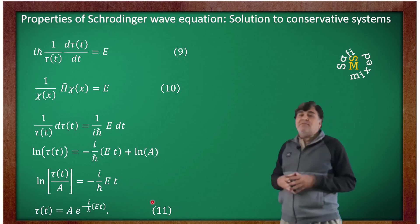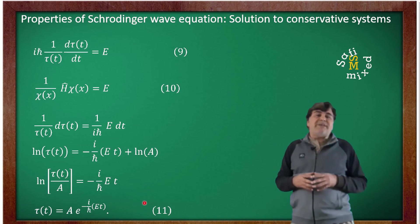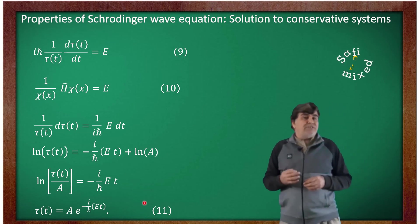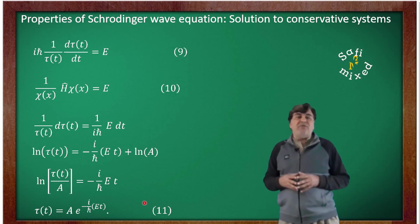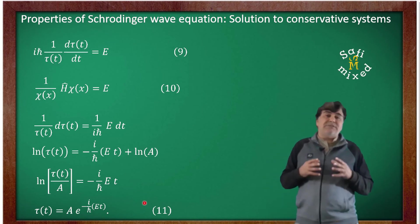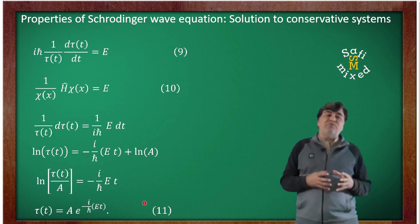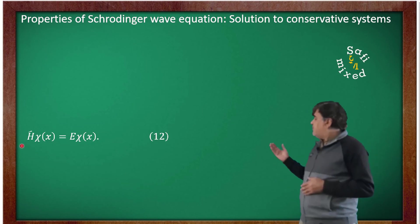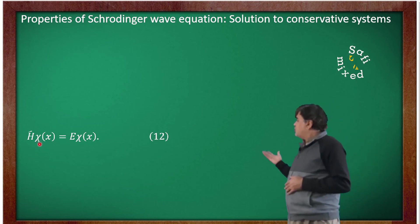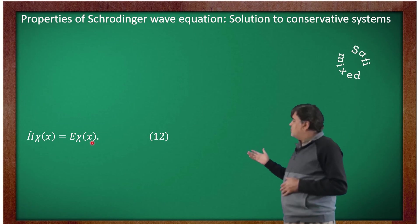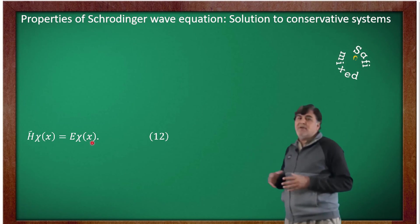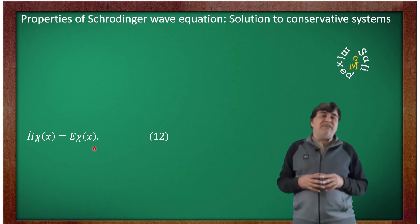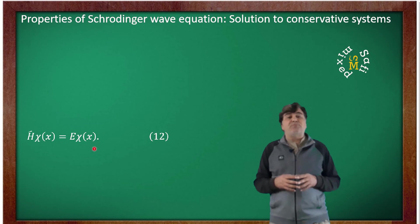This equation is the solution to the time-dependent function, where the integration constant A is obtained from the values of the wave function at t equals zero. The position-dependent part can be put into the simplified form: H-operator applied to χ(x) equals E times χ(x). The solution χ(x) to this equation is different for different choices of the potential V(x).